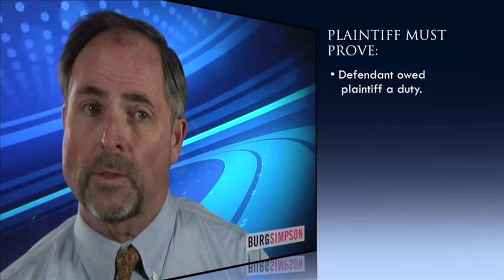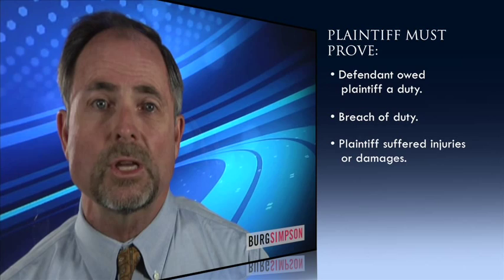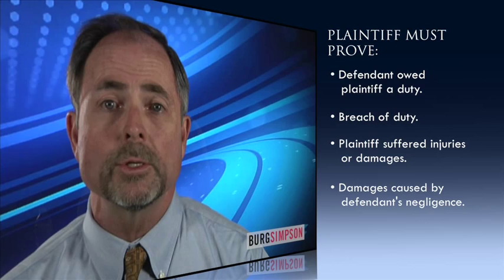Let's take an example — a car wreck case. I try far more complex cases than a car wreck, but the principles are the same no matter how complex the case is. In your typical car wreck case, a plaintiff has to prove: number one, that the defendant owed the plaintiff the duty to stay on the other side of the line; number two, that the defendant crossed the yellow line and struck the plaintiff's vehicle; number three, that the plaintiff suffered injuries or damages; and number four, that the claimed damages were caused by the negligence of the defendant. These are called the elements of the plaintiff's claim.